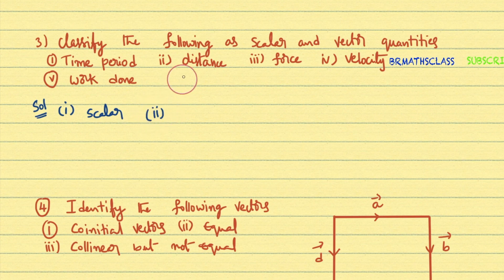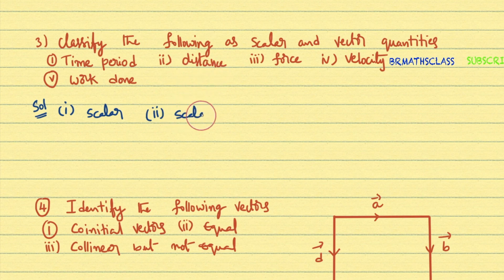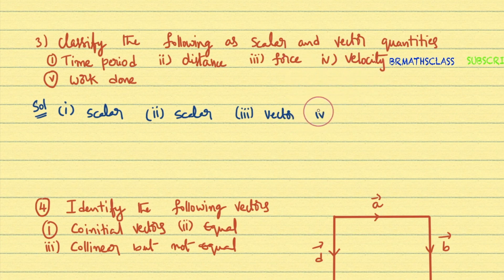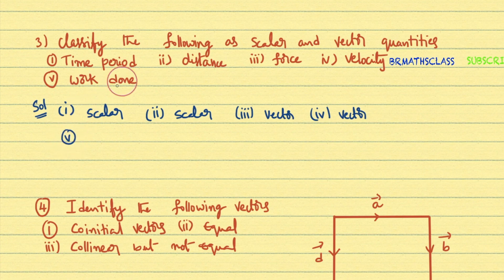Second bit: Distance — no direction is needed for distance, so it is a scalar quantity. Third bit: Force — force is a physical quantity that needs both magnitude and direction, so force is a vector. Velocity and acceleration are also vectors. Work done — how much work is done has only magnitude; you don't ask for direction. So work done is a scalar quantity.